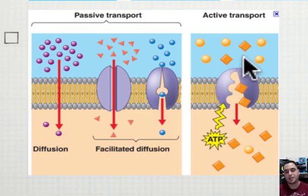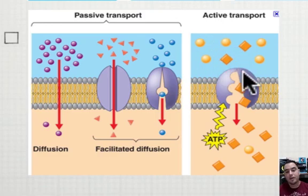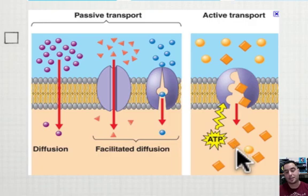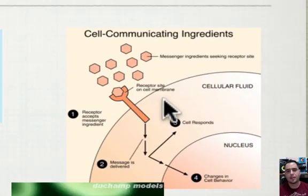Sometimes we need to force things in, so we use ATP. For example, there might not be many food molecules outside but the cell is hungry and already has a lot inside — we force it in anyway. That's from low to high concentration, the opposite direction, so it requires energy.